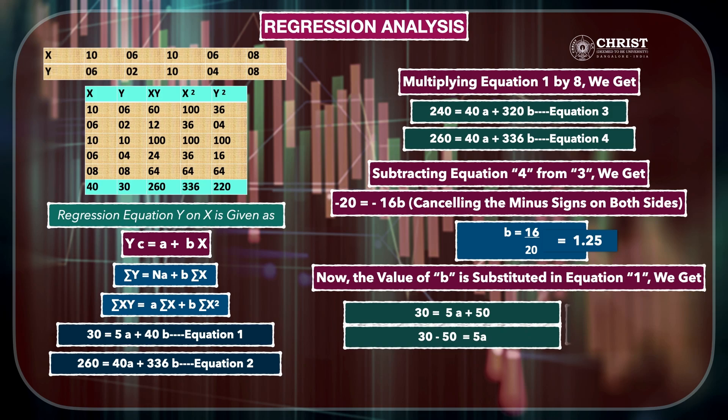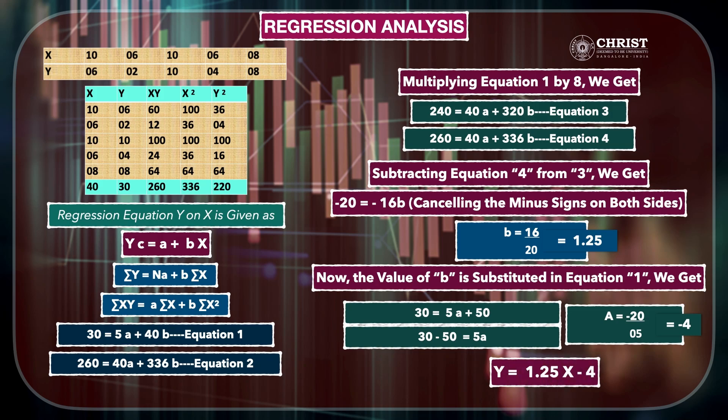From 30 = 5a + 50, we get 5a = 30 - 50 = -20, so a = -20/5 = -4. Now substituting the values of a and b into the regression equation y on x: Y = 1.25X - 4. This is what I wanted to explain with this module. Thank you.